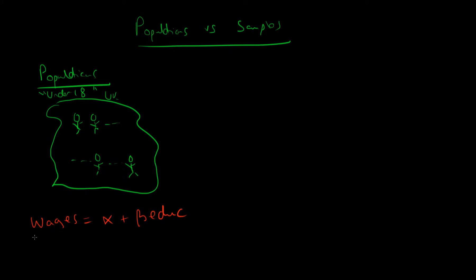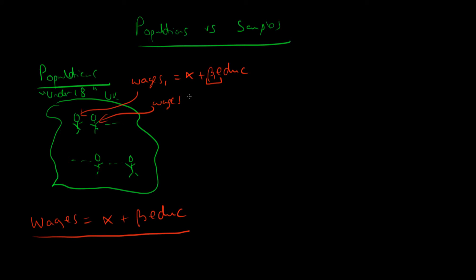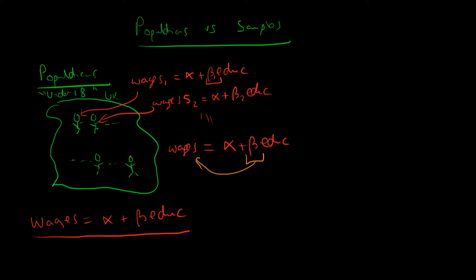Well, what does this underlying population process mean? We hypothesize that for each individual in the population there is a different effect of education on wages. For the first person, maybe beta_1 represents the effect of education on wages — perhaps $25 — and for the second person maybe it's $75, represented by beta_2. As a whole, when we sum together all of these different individual processes, we get what we call the population process, where beta represents the average effect which one year of education has on wages. This is what we call the population process.